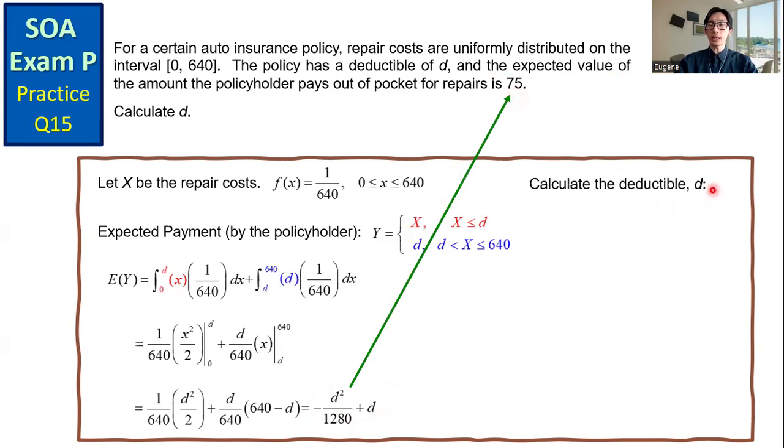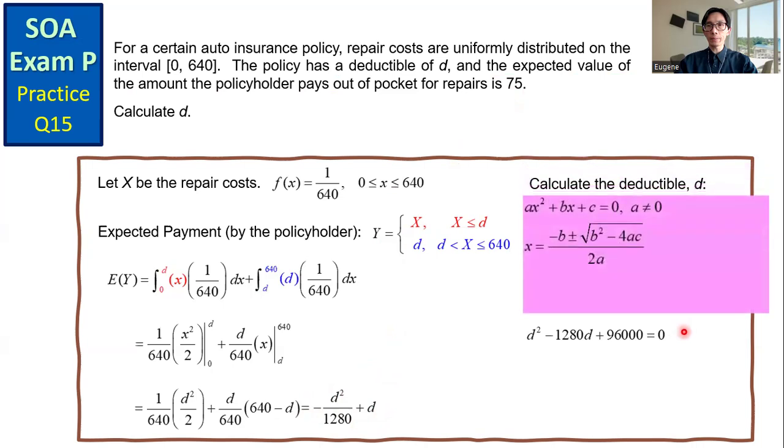We can calculate the deductible D. Solving for D, here I use the quadratic formula. Upon calculation, we get D is either 80 or 1200.